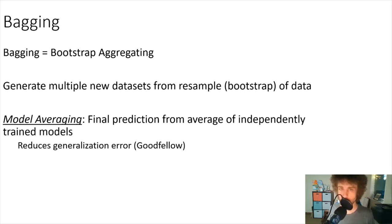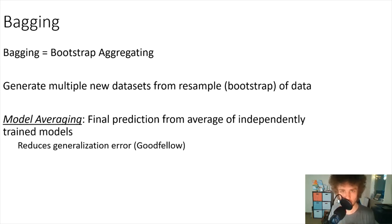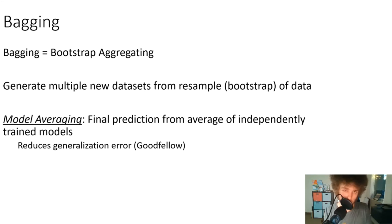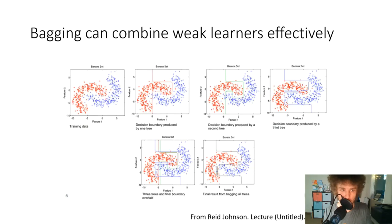You can use bootstrapping to train models and make stronger predictions — combining weak learners to get a strong model. Averaging different models together produces a powerful model-averaging effect that reduces the error on unseen data. That's another key benefit of the bootstrap aggregating, or bagging, approach.